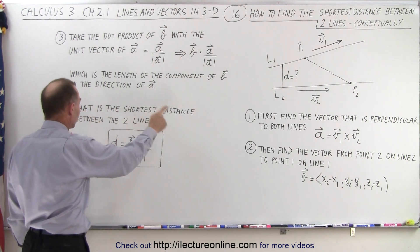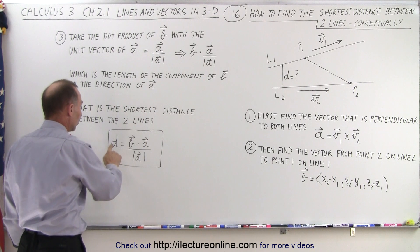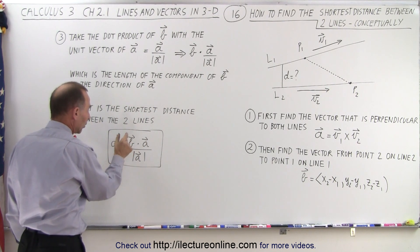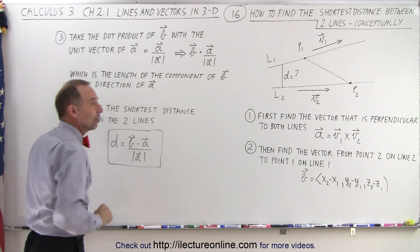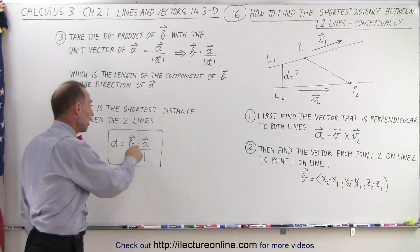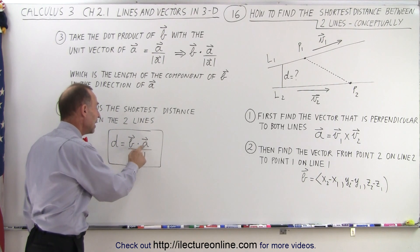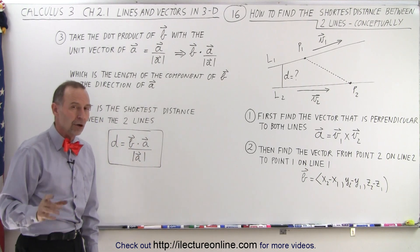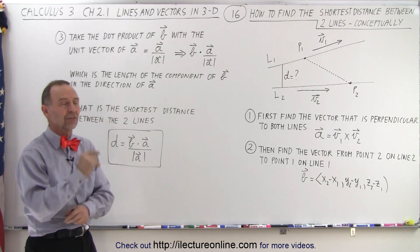It turns out that is the shortest distance between the two lines. So, the distance is simply going to be the component of B in the direction of A, or the length of the component of B in the direction of A, which can be found by taking the dot product of B and A, and dividing it by the magnitude of A. And that's how we're going to find the distance.